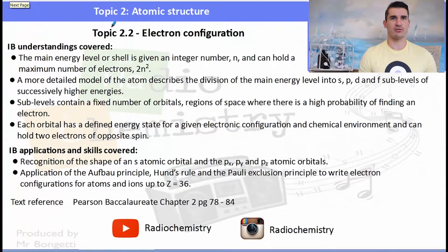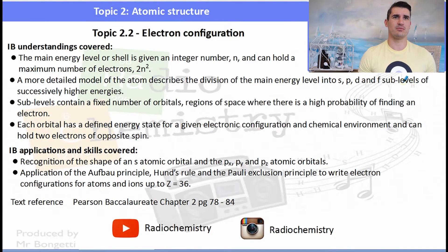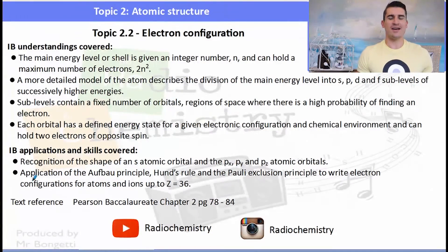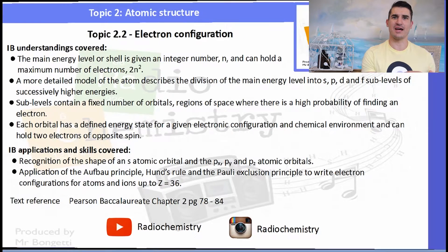Topic 2.2 electron configurations. We need to talk about how the shells can hold a maximum number of electrons, look at splitting the energy levels into S, P, D, and F, look at orbitals and the regions of space where electrons can be found, and then know the shapes of some S and P orbitals and apply principles to write electron configurations.